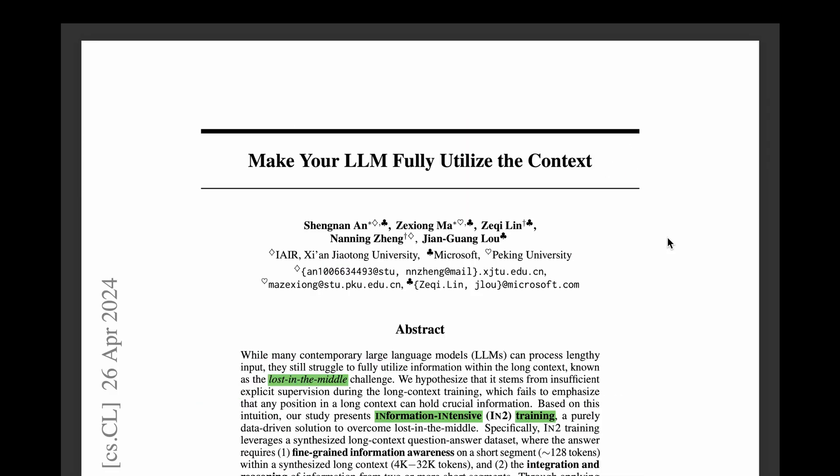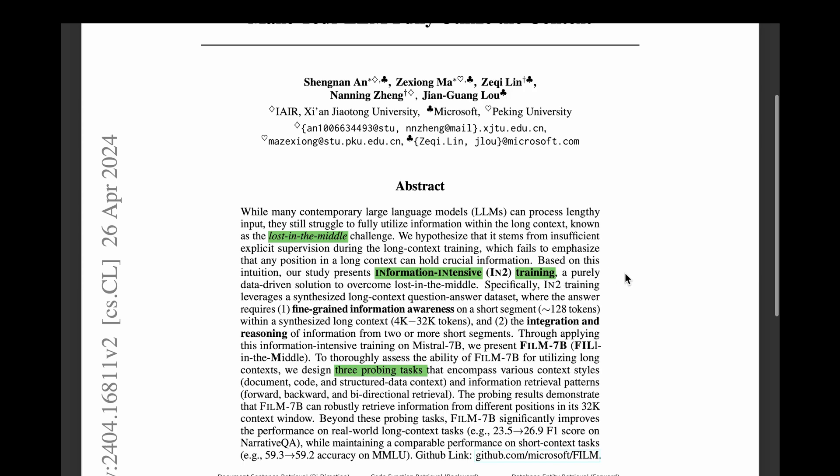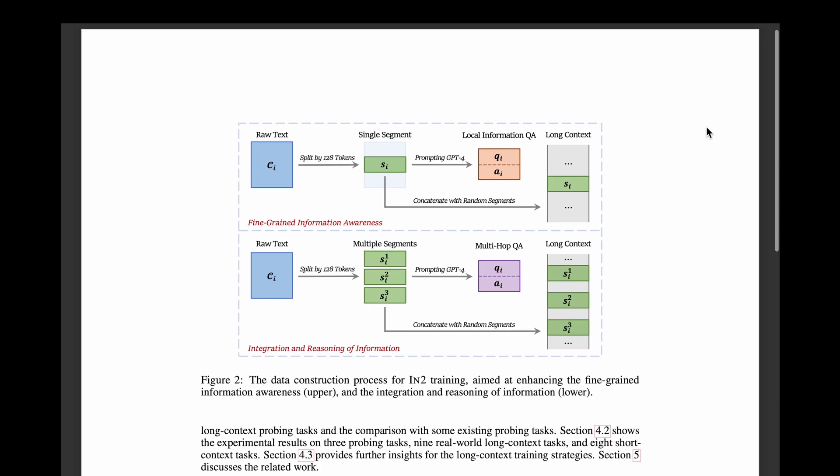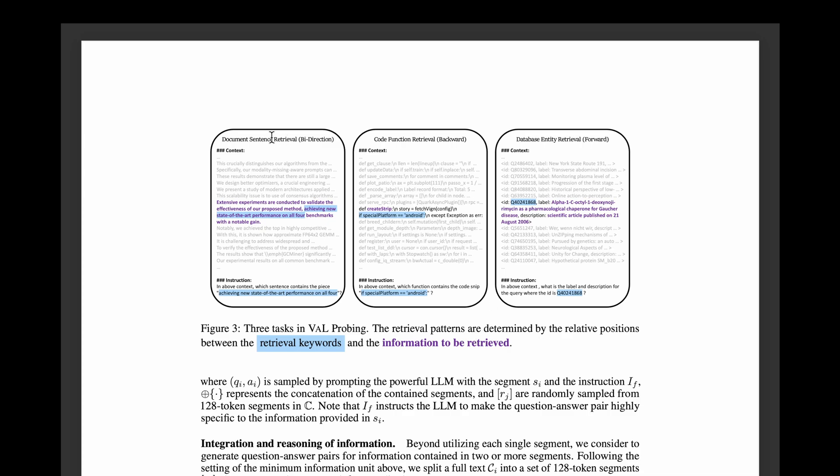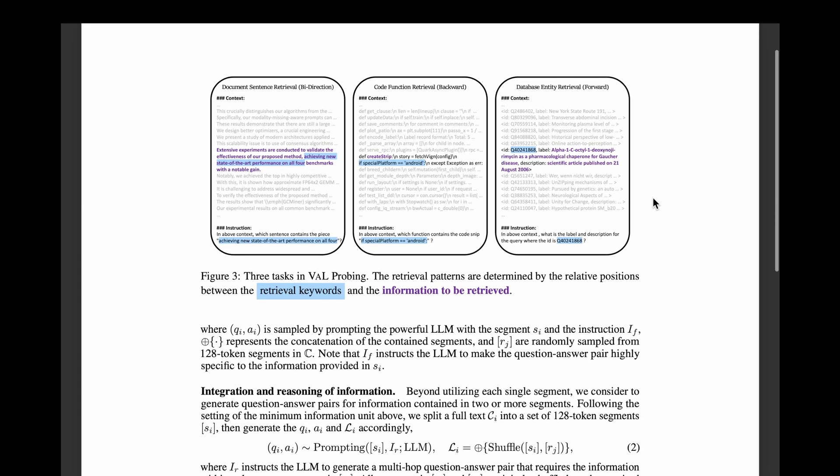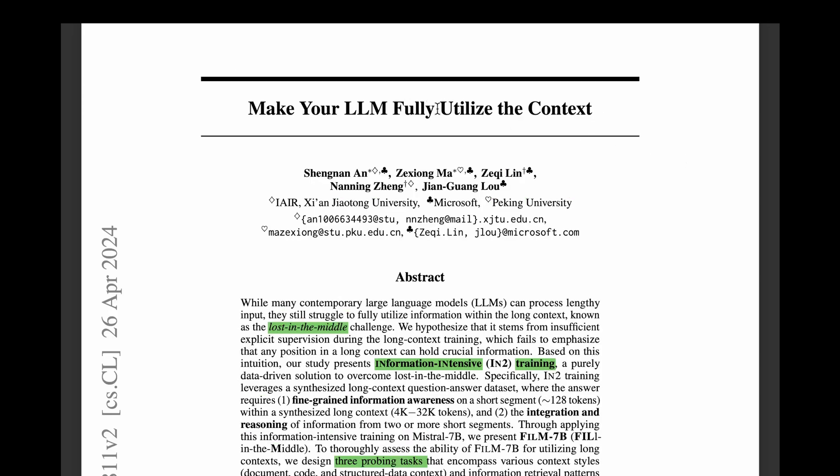the paper proposes two solutions for long-context. One is the information-intensive training, which is a data-driven training approach. And it has two types, which is fine-grained information awareness and the integration and reasoning. We saw these two pipelines for generating synthetic data when it comes to the IN2 training. And then we saw also about long-context probing. And they have proposed a new type of probing called various long-context probing. And the main contribution there is to utilize three retrieval types, namely bidirectional, backward and forward. And they've also proposed the probe for three data types. One is the standard textual data and the other one is the code data. And the third one is the structured data, such as database entries.